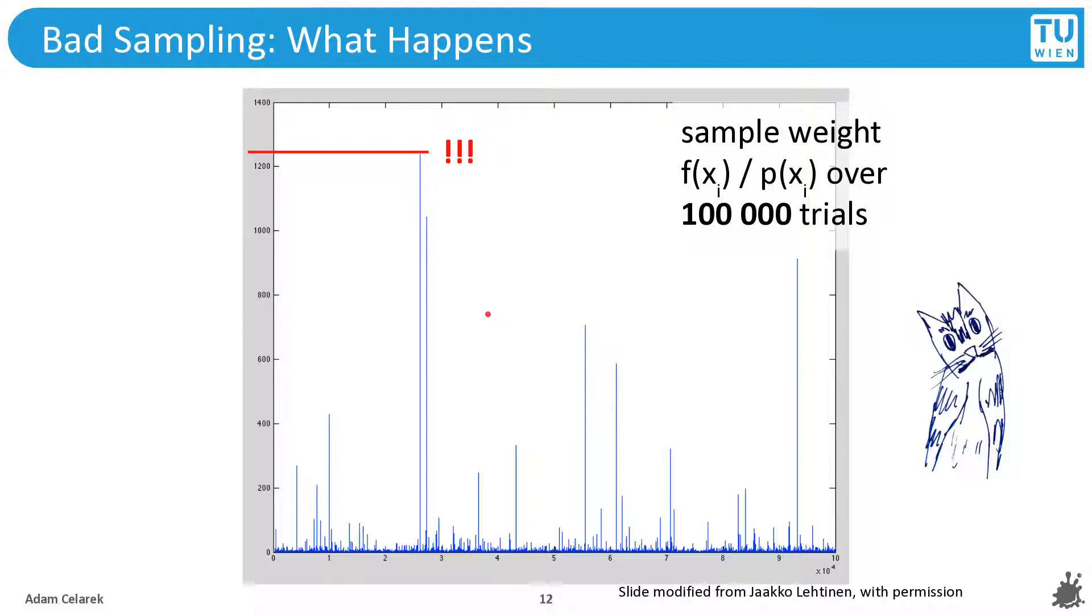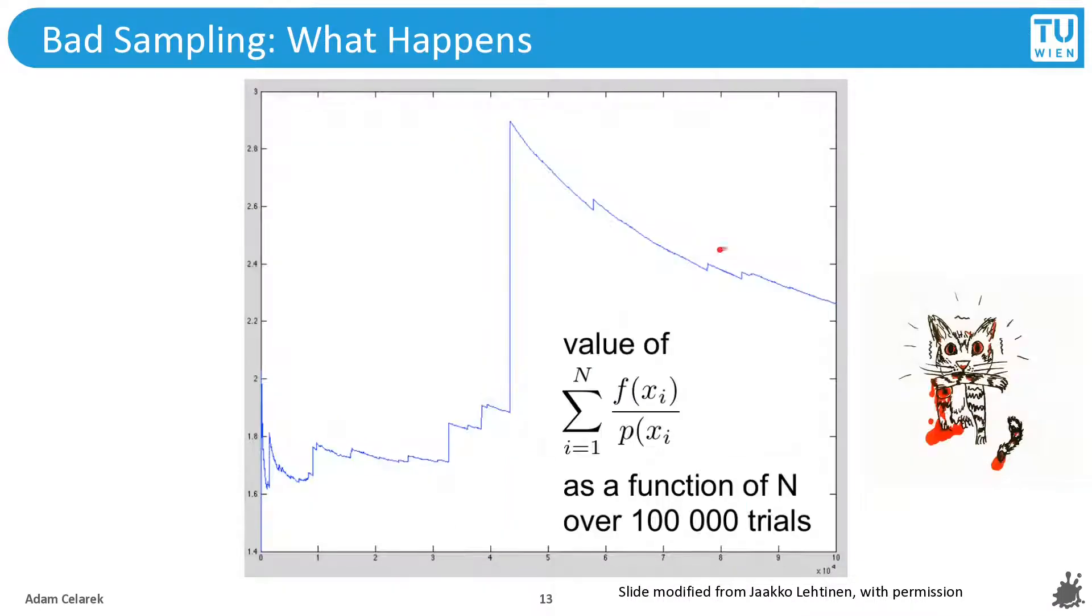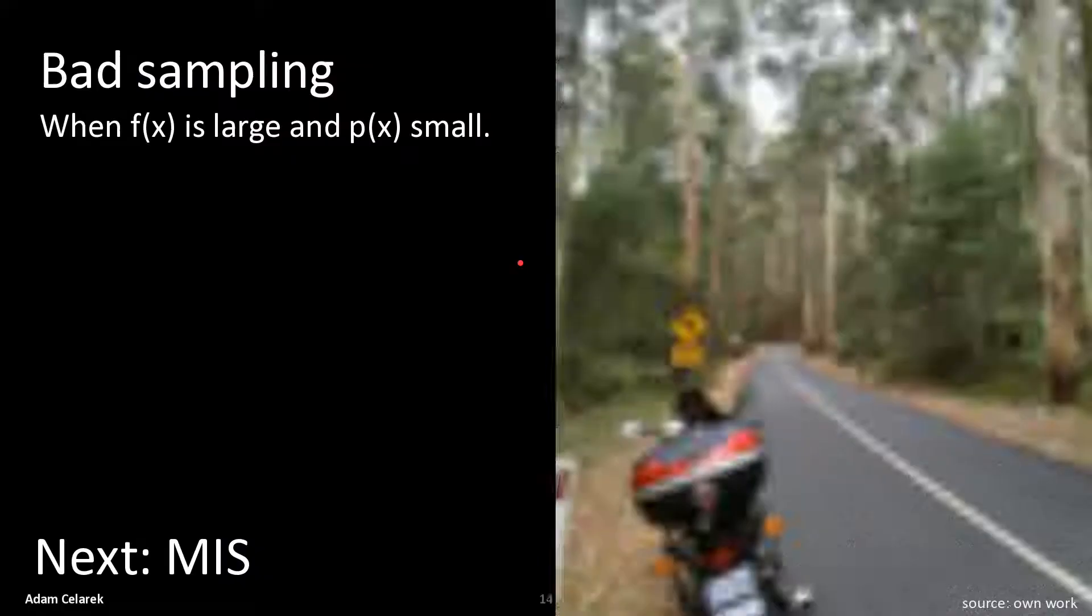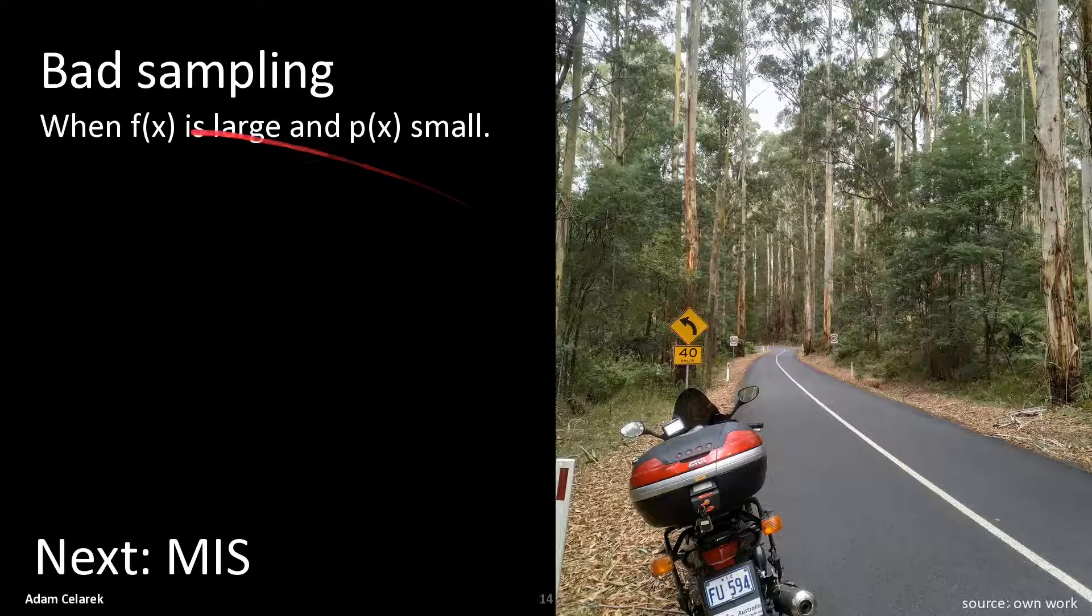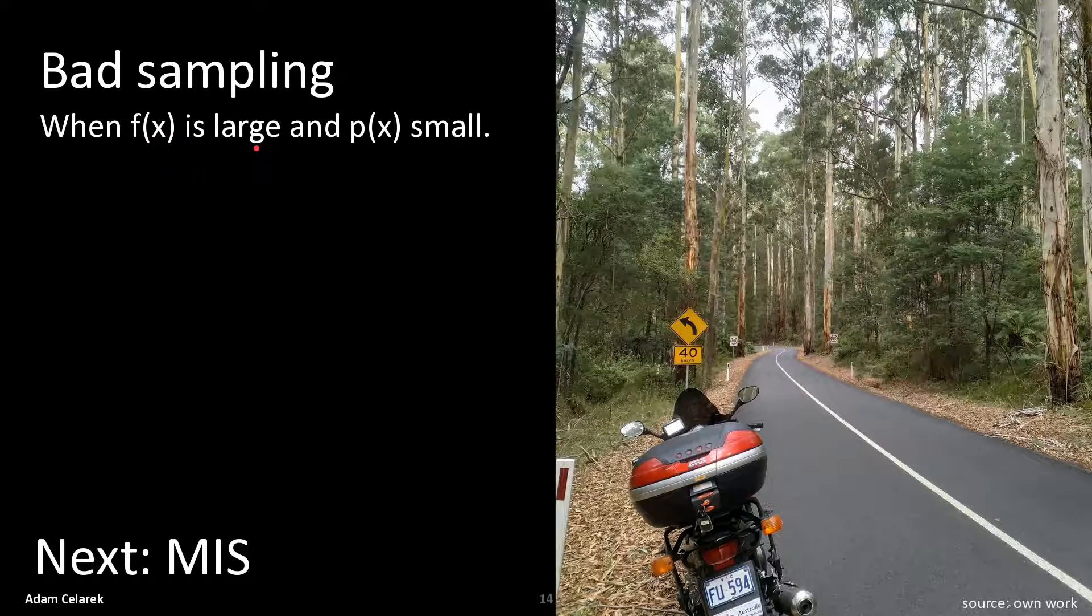Therefore even when we increase the number of trials this doesn't help even when we average. And here we can see on the x-axis the number of trials while on the y-axis we see the estimate. So this is already this average where the n grows in here. And you can see that from time to time we will have these very large spikes and those are problematic during rendering.